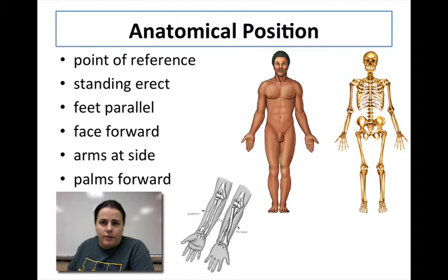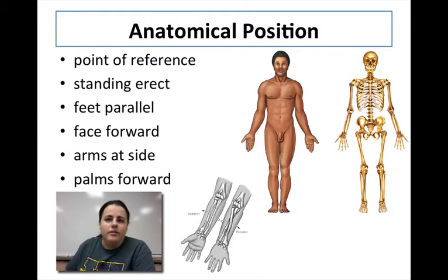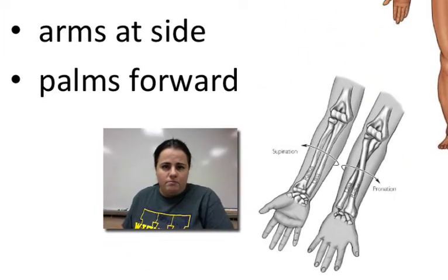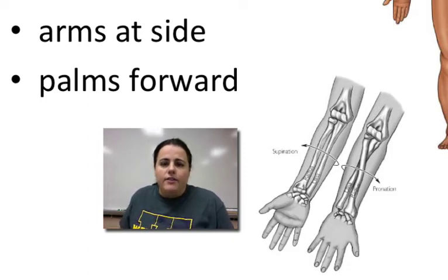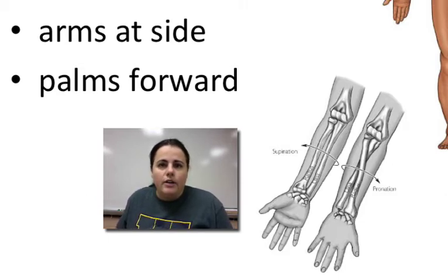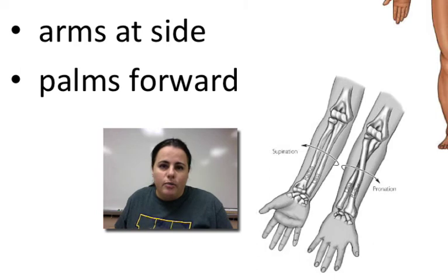Of course, if it was a cadaver, then the corpse would be on their back instead. Anytime we talk about different body parts, you have to imagine the subject is in this position. Some students wonder about the palms facing outward, which is awkward — you don't walk with that. But if you look at the picture of the forearm, you can see that when the palm is facing out, it makes the two bones of the forearm — the ulna and radius — parallel. When you're not palms out, it causes them to crisscross, and then you don't know which one's on the inside or outside.